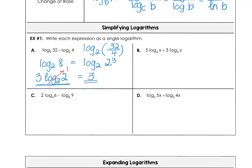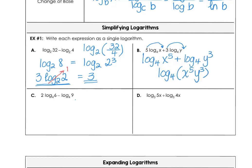In example b, we want to put the 5 back upstairs with x and the 3 back upstairs with y, giving us log base 4 of x to the fifth multiplied by y to the third. Since we have the sum of two logs, that's the log of a product. So we get log base 4 of x to the fifth times y to the third — that's as far as we can go. We moved the powers 5 and 3 back upstairs on each individual log and then used the product property.